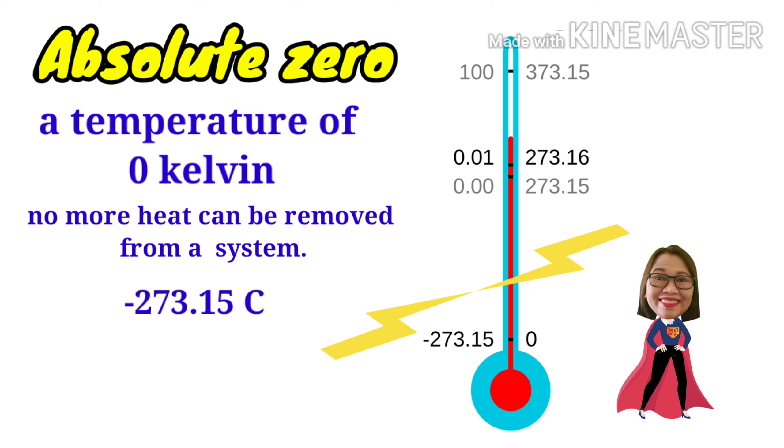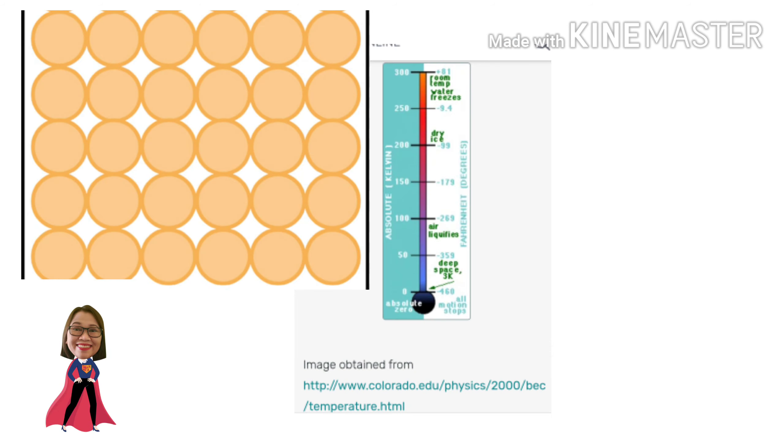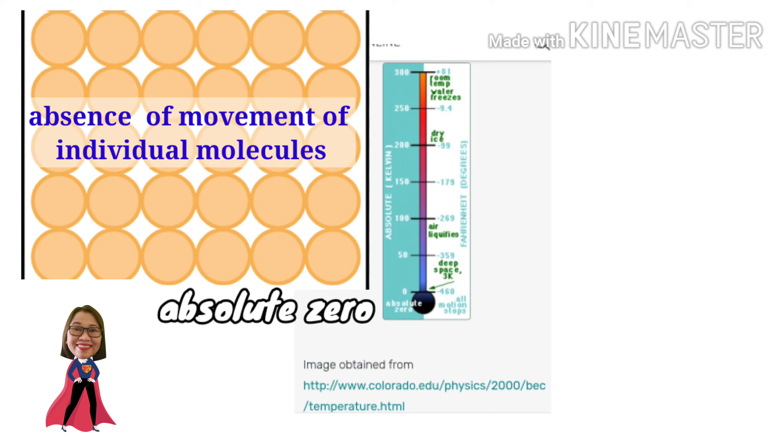This is zero on the Rankine scale and minus 459.67 Fahrenheit. The classic kinetic theory posits that absolute zero represents the absence of movement of individual molecules. However, experimental evidence shows this isn't the case.